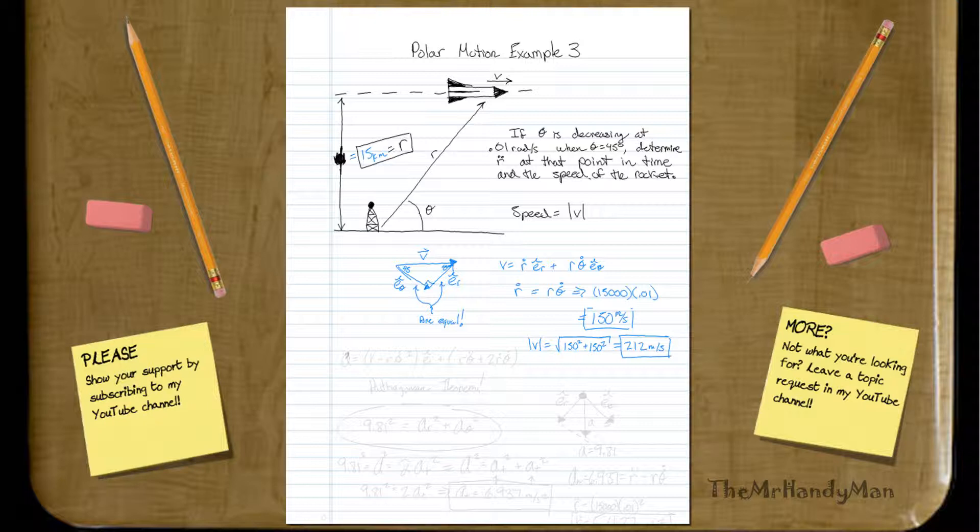Then, we can pull out the acceleration equation: r double dot minus r theta dot squared e_r, plus r theta double dot plus 2 r dot theta dot. So basically, all we do there is we say, let's use the Pythagorean theorem. We know all the results already, so let's just see what we can get from the Pythagorean theorem. Let's assume that it's very aerodynamic, so no air resistance. Let's just use the Pythagorean theorem.